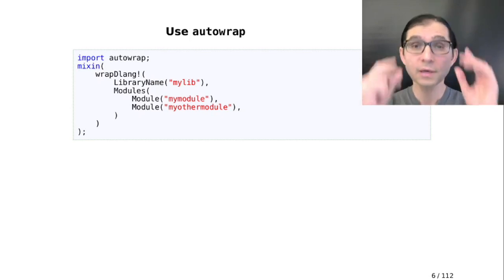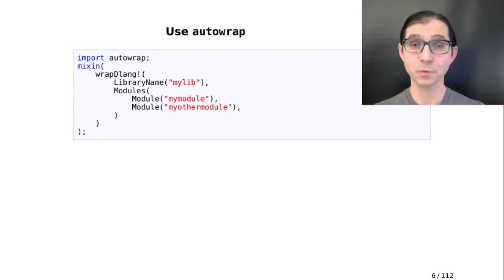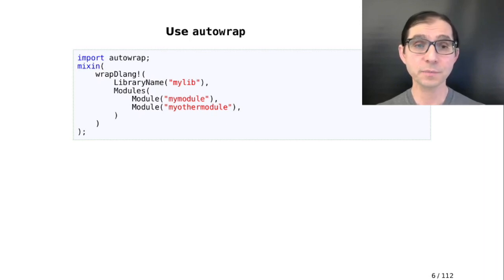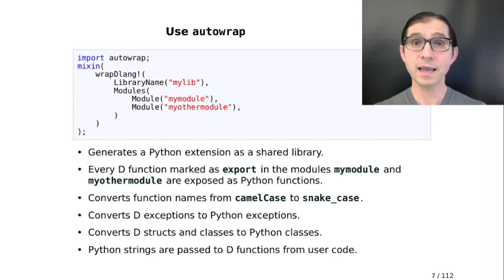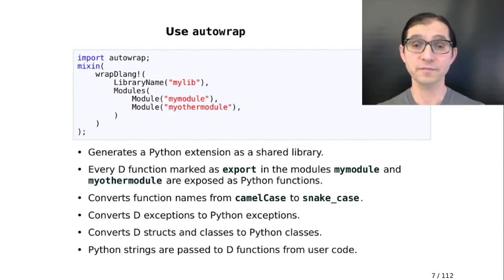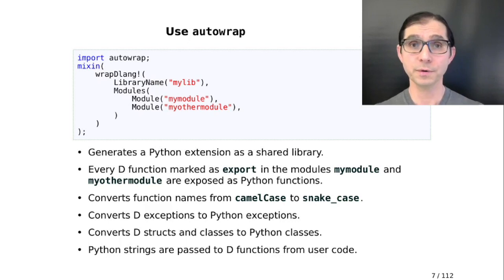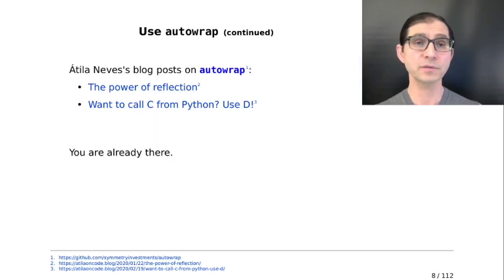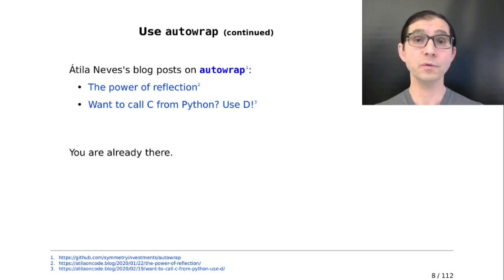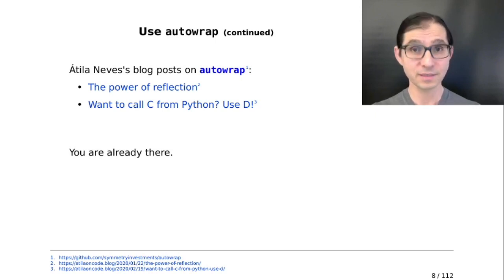Before going forward, I recommend that you use AutoWrap if you want to expose your D code to Python. Just by importing AutoWrap and mixing in this expression, any exported functions in your MyModule and MyOtherModule will be exposed as Python functions. Even names that are camel case on the D side will magically appear as snake case on the other side. D exceptions will be translated to Python exceptions and everything will work. To learn more about AutoWrap, you can read Attila Neves' blog posts on the topic. AutoWrap can expose your D code, even C code, to Python.